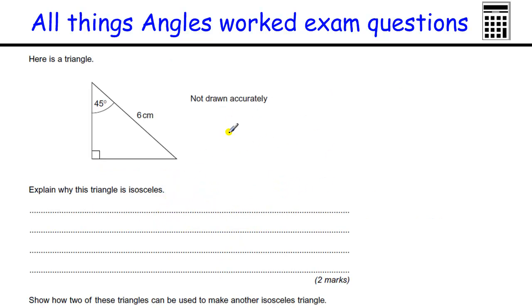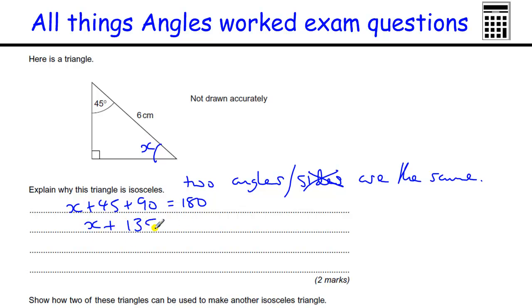Angles in a triangle. We should know the angles in a triangle add up to 180. We've got to explain why this triangle is isosceles though. Isosceles means two angles or sides are the same. I'm not going to deal with the sides here. We're just going to look at the angles. So to prove this is isosceles, I'm going to show that two of the angles are the same. So I've got a missing angle. I'll call it X. So X plus 45 plus this little square here, which is 90, equals, in a triangle, 180 degrees. So X plus 135 equals 180. So X, 180 take away 135, is 45. So X equals 45 degrees. So two angles the same, therefore isosceles.